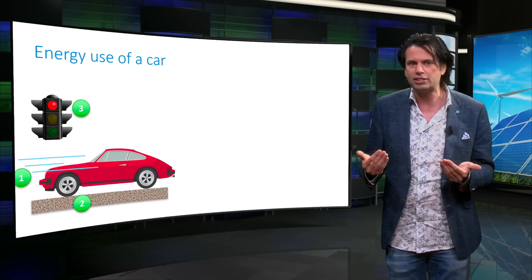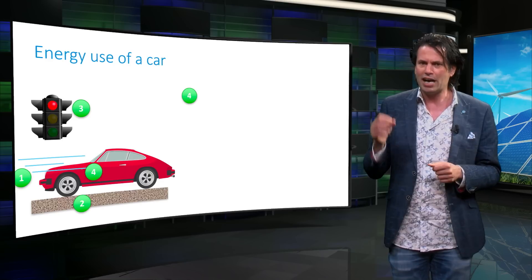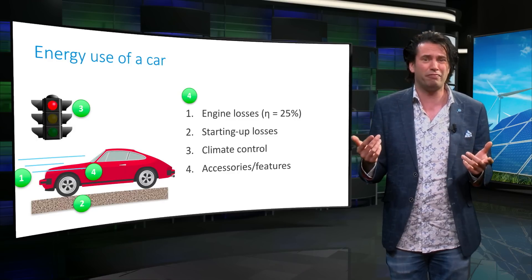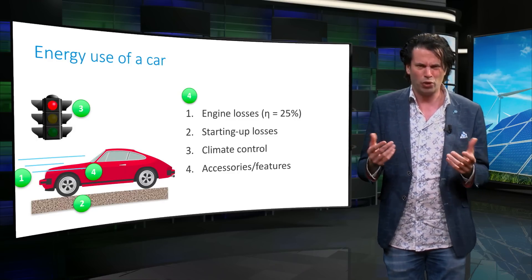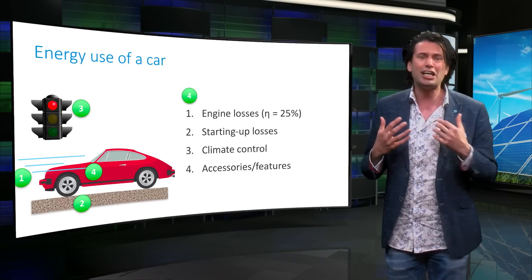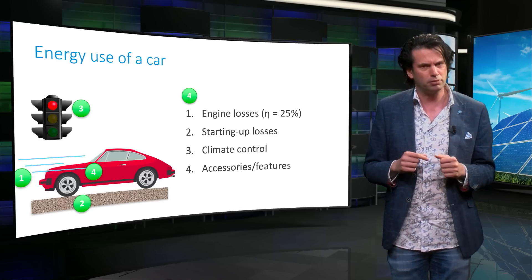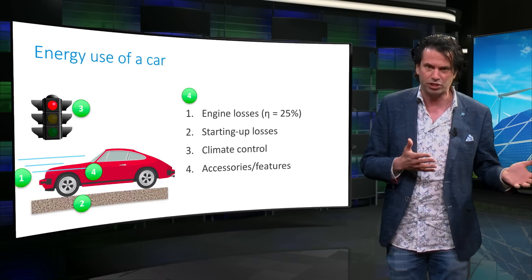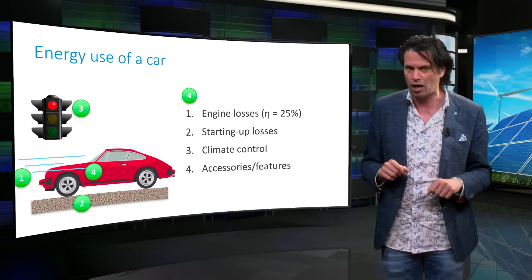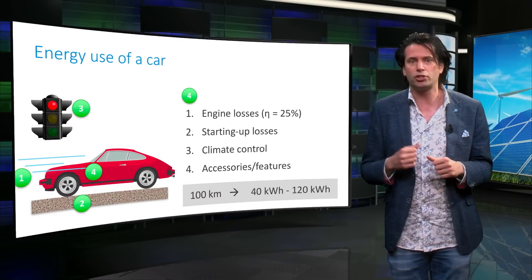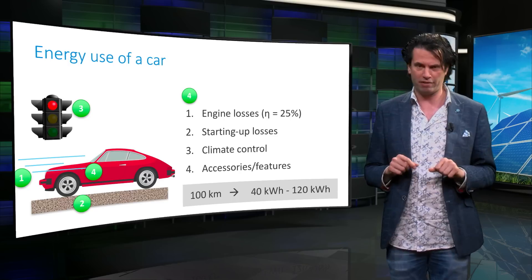Apart from the energy required to overcome these three forces that oppose motion, energy is also used within the car. A typical internal combustion engine has an efficiency of about 25 percent, which means that to overcome the power of resistance of 10 kilowatts, 40 kilowatts of chemical power in the form of fuel is consumed. In addition, there is a certain amount of power utilized to start a car from a standing position, as well as energy that is consumed by the car climate control and other features. The chemical energy needed to travel 100 kilometer by car ranges from 40 kilowatt hours up to 120 kilowatt hours, depending on the type of car and the typical driving conditions.